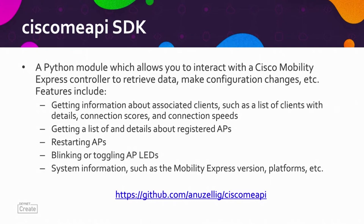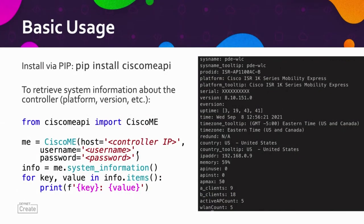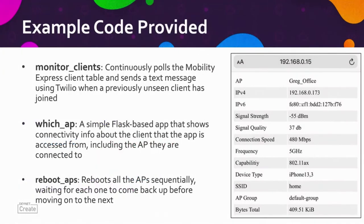Here's some basic usage. You would install it with pip install, or use Poetry or whatever your package manager of choice is. This snippet of code shows an example of how you would connect to a controller — you simply provide the controller's access point, username, and password, then use the system information method to get some information about the deployment. The screenshot on the right shows some of the information that would be reported. I also provided some sample code along with the SDK itself.